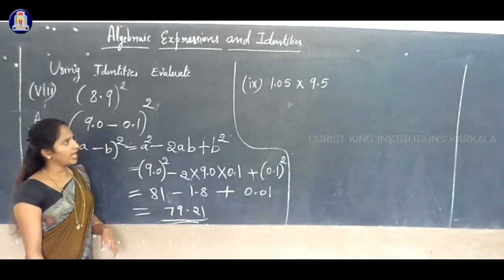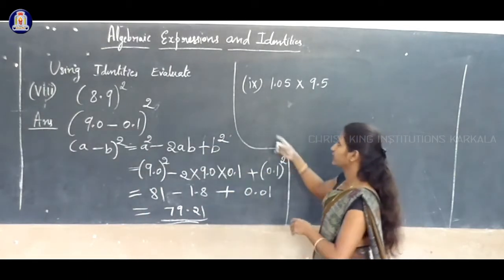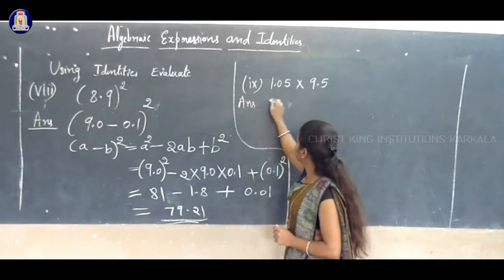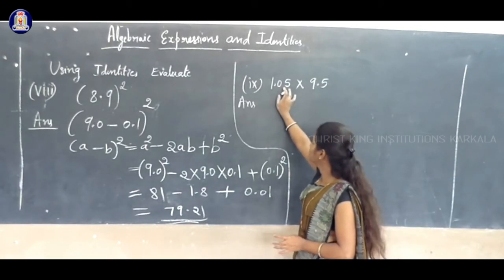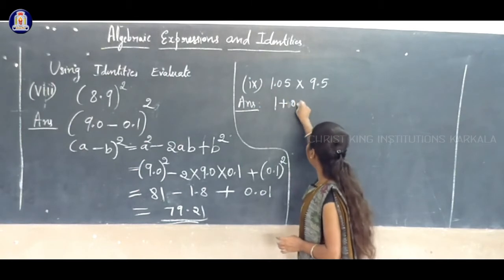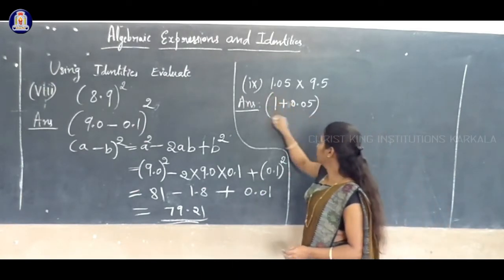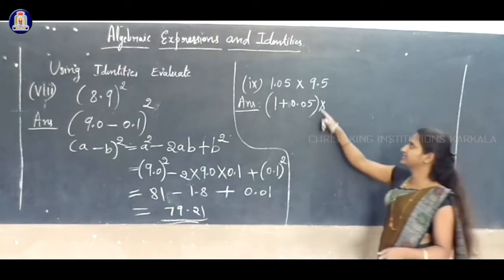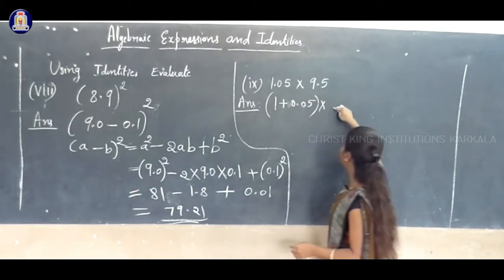One more question: 1.05 into 9.5. So, 1.05 is near to 1, and can be written as 1 plus 0.05. Clear? Now, 9.5 is larger than 1.05. So we cannot write 1 minus 0.05 for 9.5.